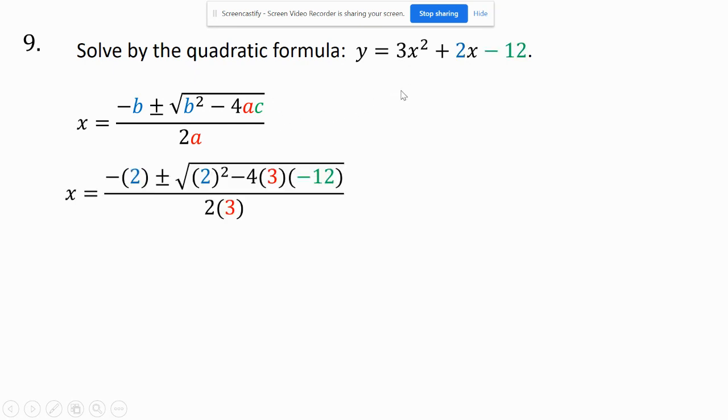And a is 3, b is 2, and c is negative 12. So I'm going to plug these values in. Notice for the b's I put a 2, for the a's I put the 3, and for the c I put a negative 12.